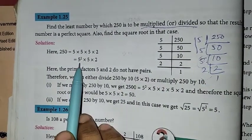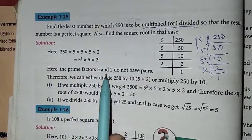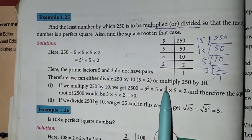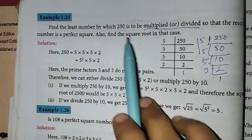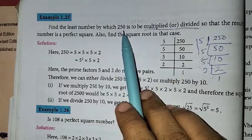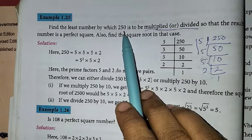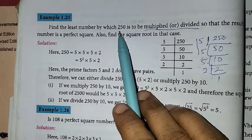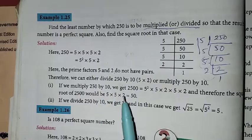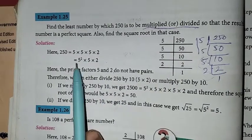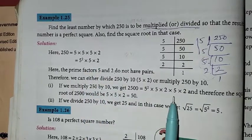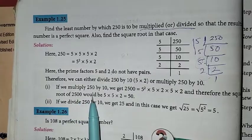This pair, 5 square into 5 into 2. Here the prime factors 5 and 2 do not have pairs, therefore we can either divide 250 by 10 or multiply 250 by 10.